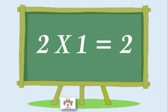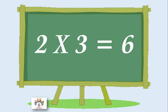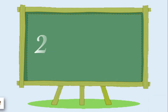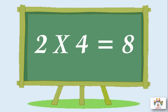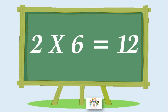Two ones are two, two ones are two. Two twos are four, two twos are four. Two threes are six, two threes are six. Two fours are eight, two fours are eight. Two fives are ten, two fives are ten. Two sixes are twelve, two sixes are twelve.